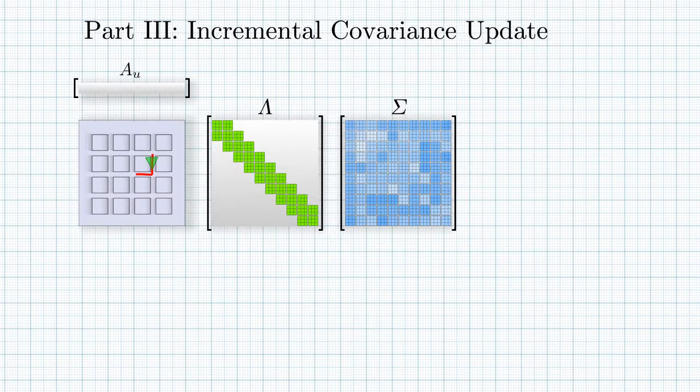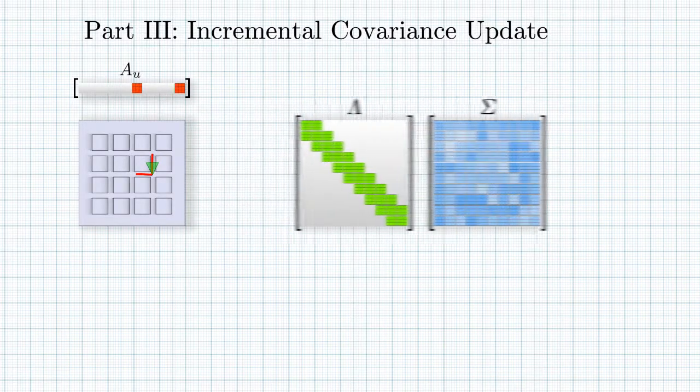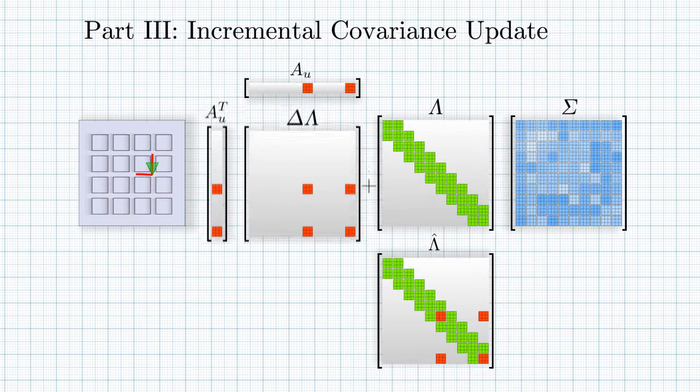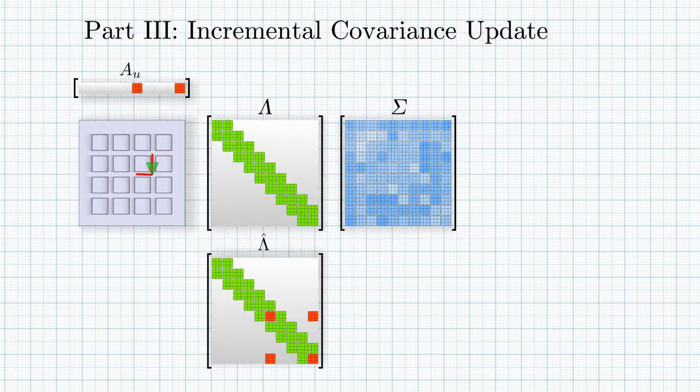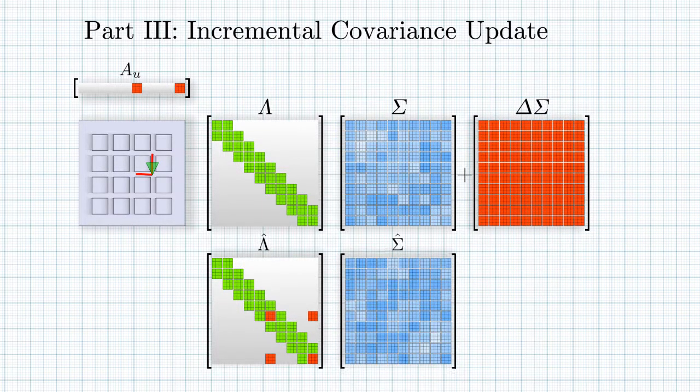So what happens if we want to incrementally update the covariance matrix? When we update the Hessian matrix lambda, the update is additive and only few elements change, the ones corresponding to the variables involved in the update. We will further show how the inverse matrix sigma can be also updated in an additive way.